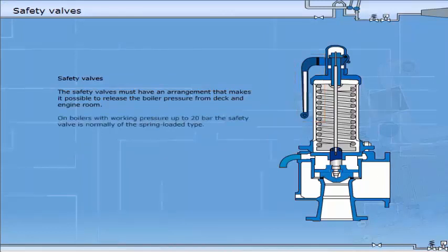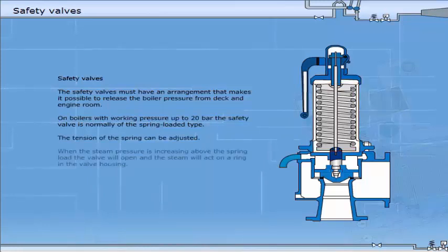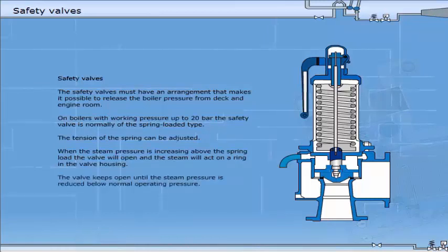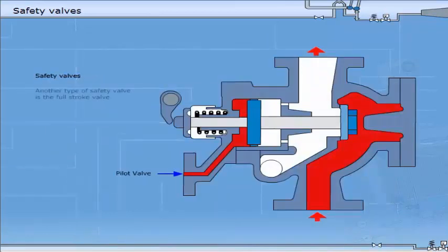On boilers with working pressure up to 20 bar, the safety valve is normally of the spring loaded type. The tension of the spring can be adjusted. When the steam pressure increases above the spring load, the valve will open and the steam will act on a ring in the valve housing. The valve keeps open until the steam pressure is reduced below normal operating pressure.